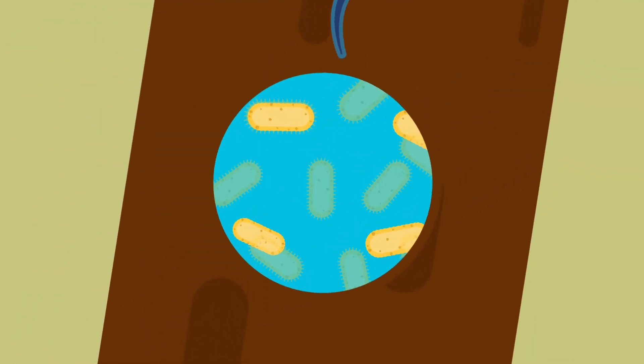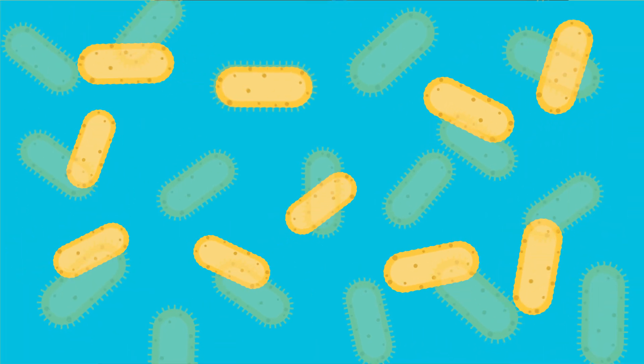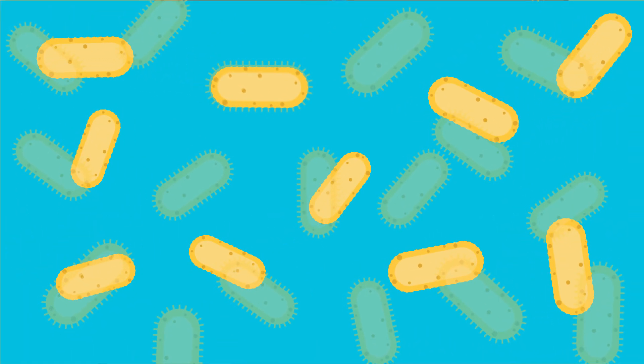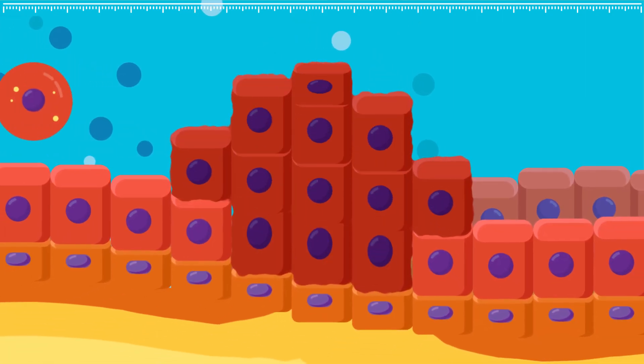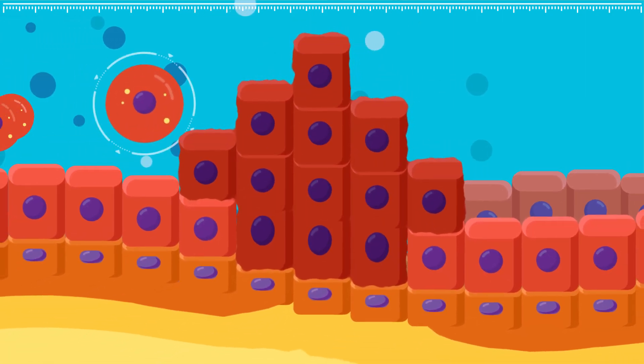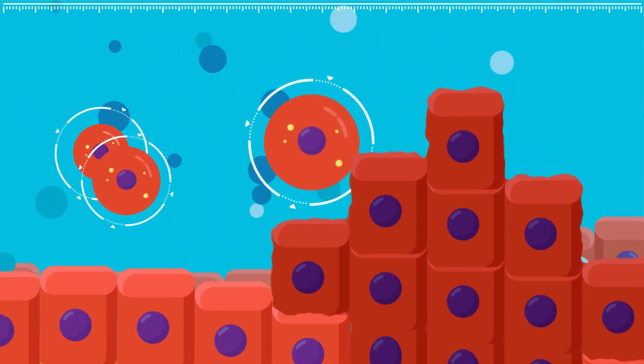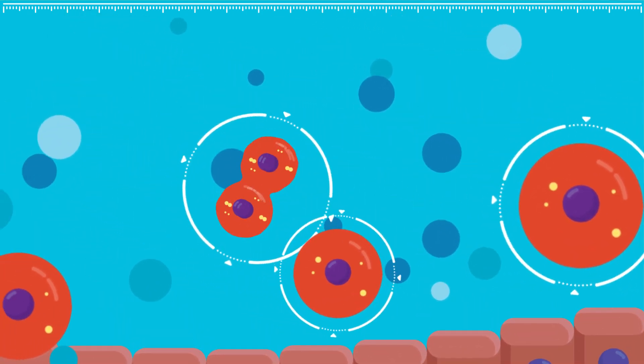If mitosis remains unchecked, it may result in uncontrolled growth of cells leading to cancer or tumor. The next important phase of cell cycle is meiosis.